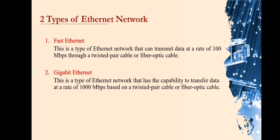There are two types of Ethernet network: Fast Ethernet and Gigabit Ethernet. Fast Ethernet is a type of Ethernet network that can transmit data at a rate of 100 Mbps, or megabits per second, through a twisted pair cable or a fiber optic cable. The data rate can be upgraded from 10 Mbps to 100 Mbps with no protocol translation or changes in the application and network software.